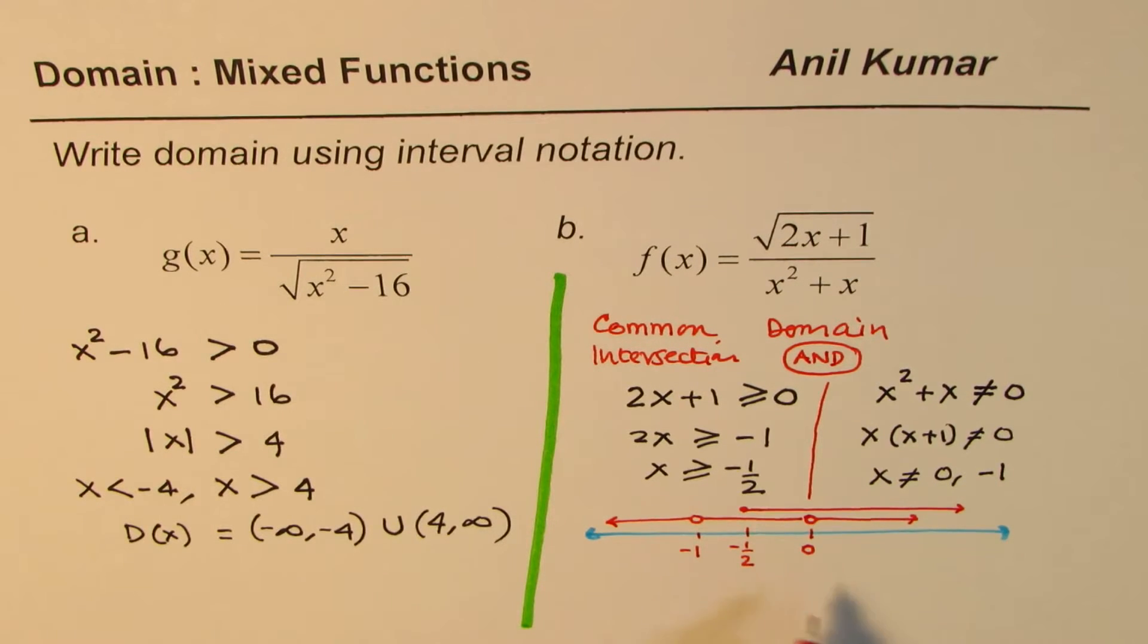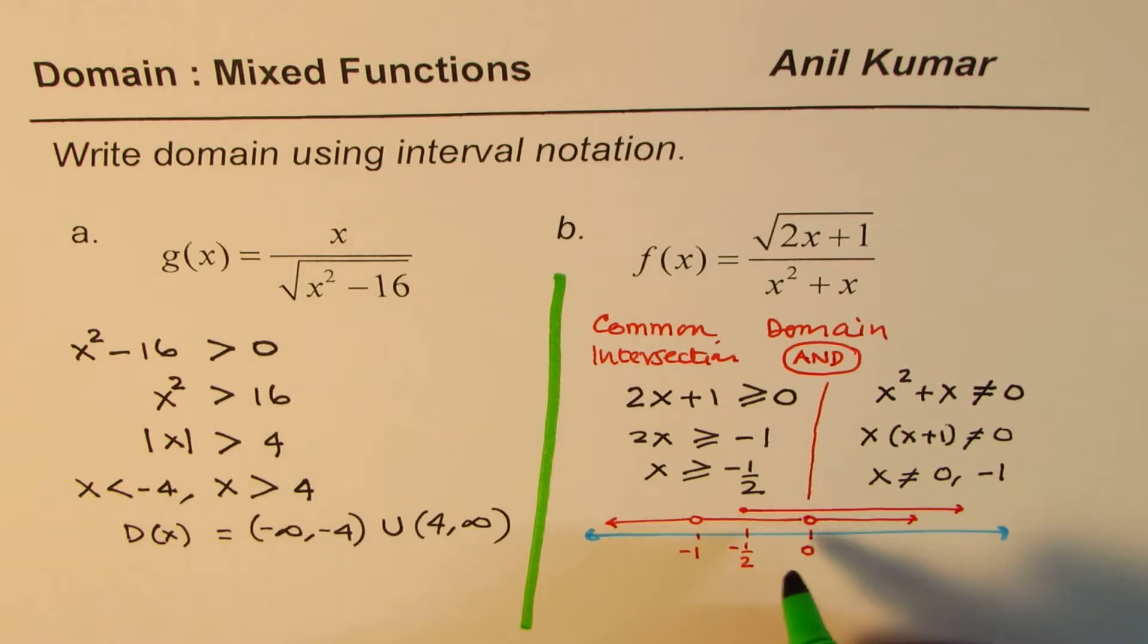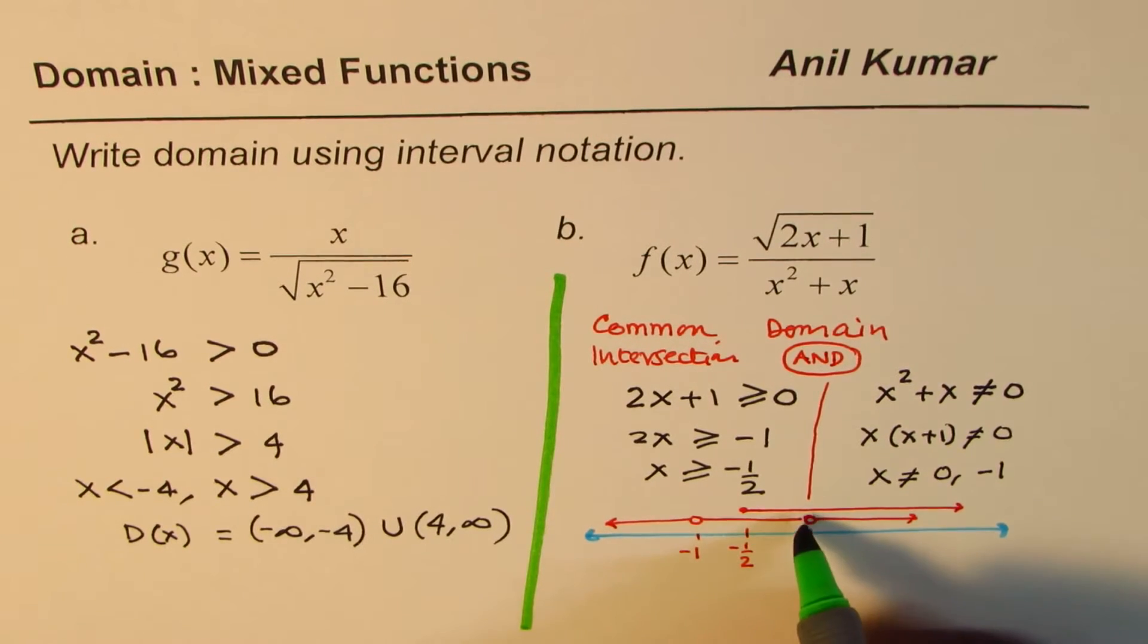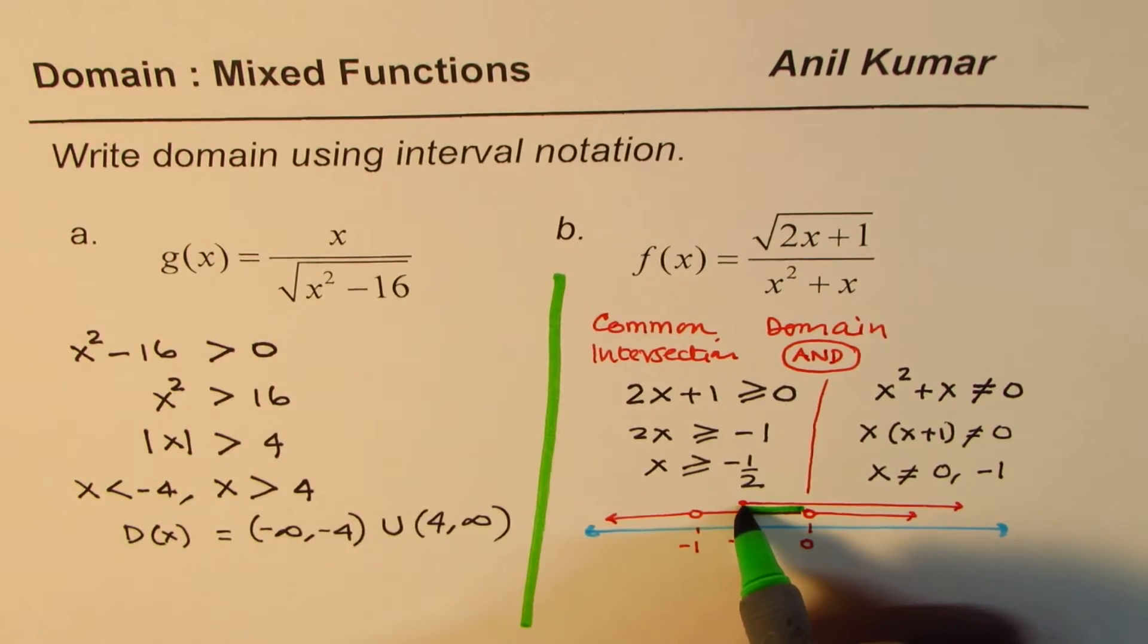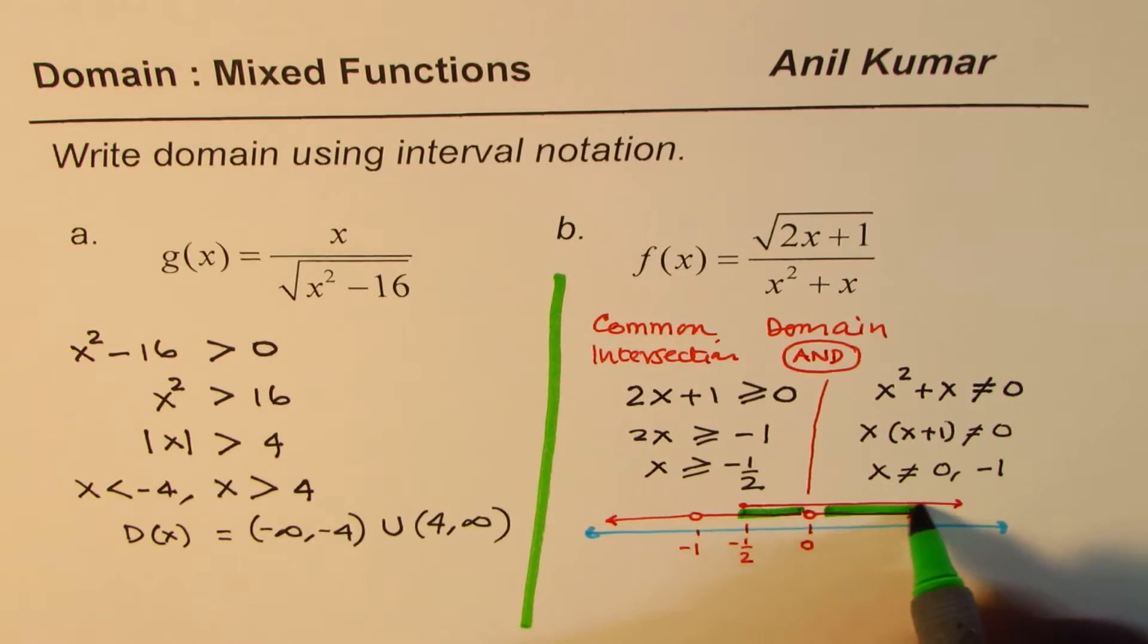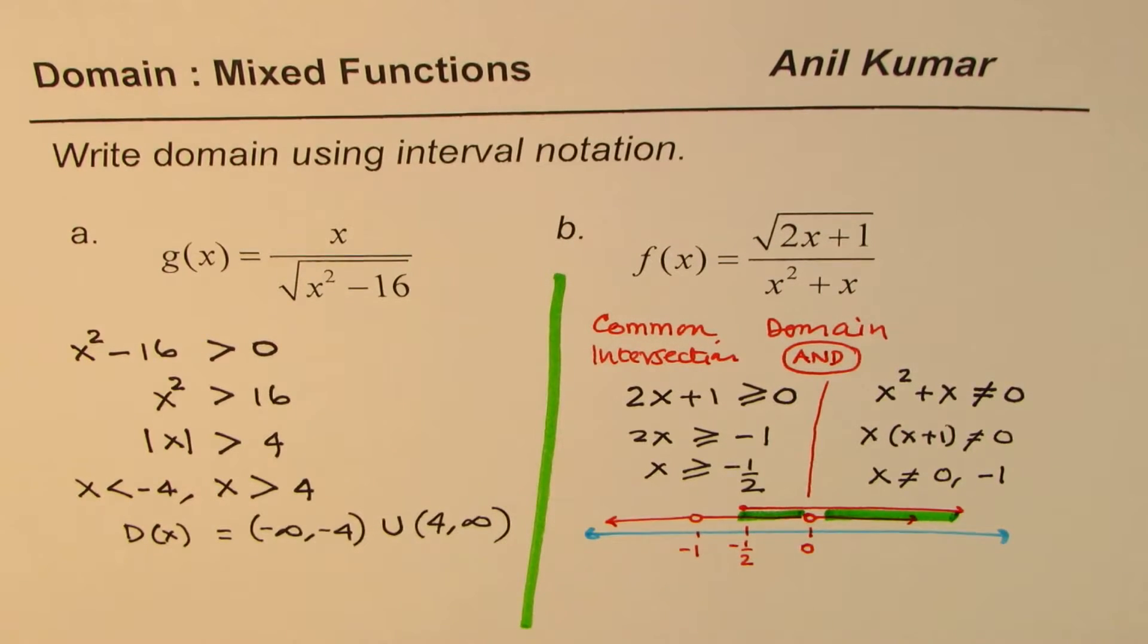Now what we need to find here is the intersection of the two, what is common between both. That is the domain. Clearly the common portion here is we cannot include this 0, but we could include all other things up to this point and thereafter. That becomes the common portion.